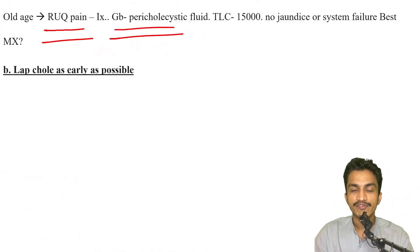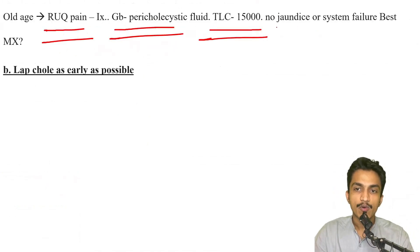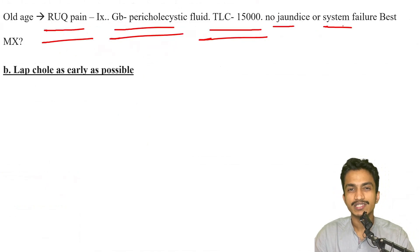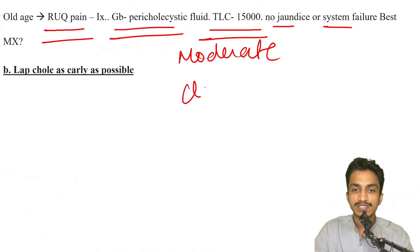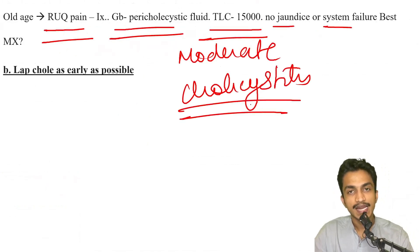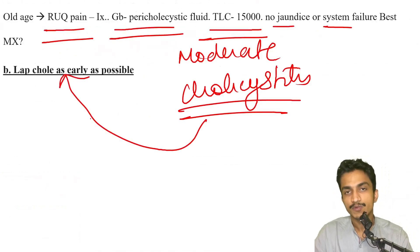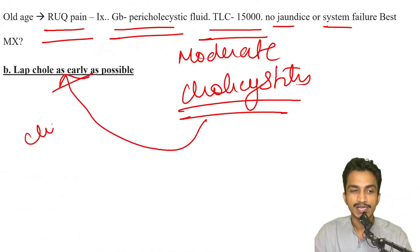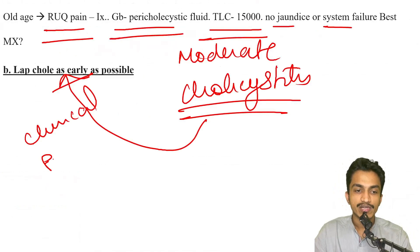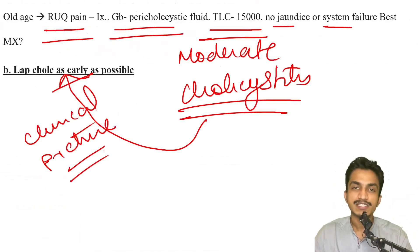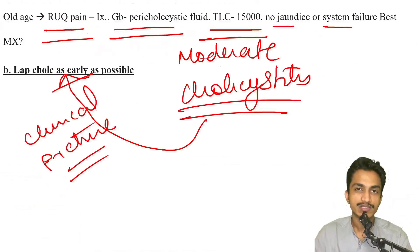Patient with old age, right upper hypochondriac pain, pericholecystic fluid, increased DLC count, no jaundice, and no systemic failure — this comes under moderate cholecystitis according to Tokyo guidelines. The treatment is laparoscopic cholecystectomy as early as possible. In clinical practice we operate as soon as possible; we do not do interval cholecystectomy — we go for lap coli as soon as possible in such patients.